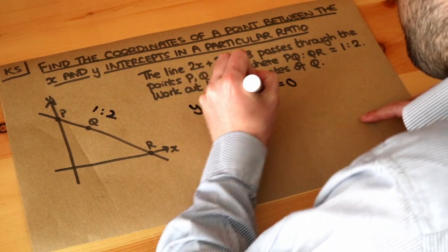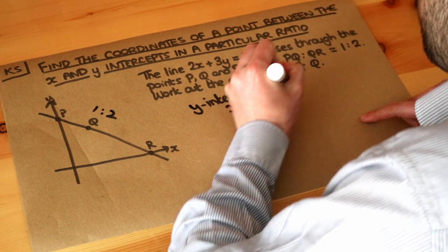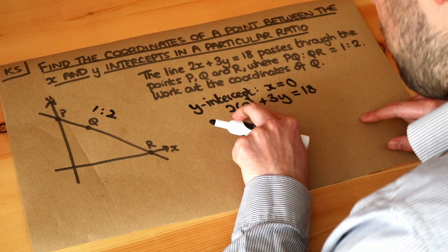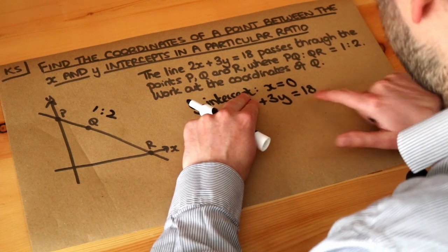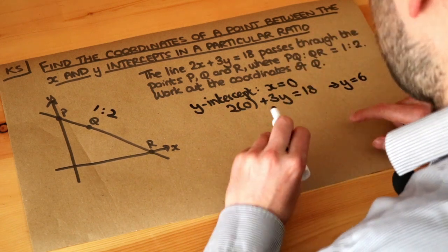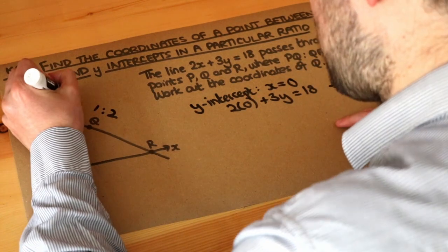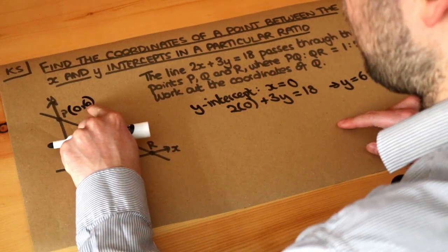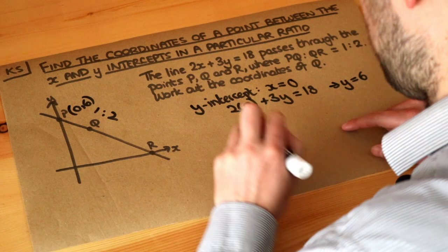So if we substitute x is 0 into this equation, we get 2 times 0 plus 3y equals 18. Now 2 times 0 is just 0, so we end up with 3y equals 18, which means that y is 6. So when x was 0, y was 6. So P has coordinates 0, 6.